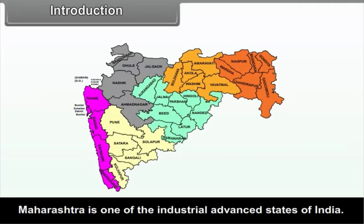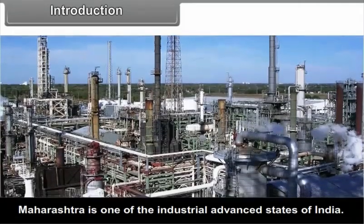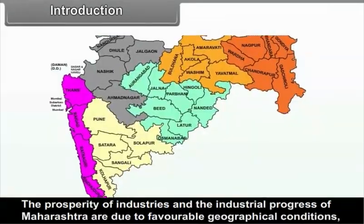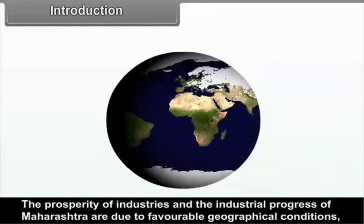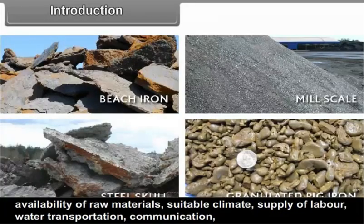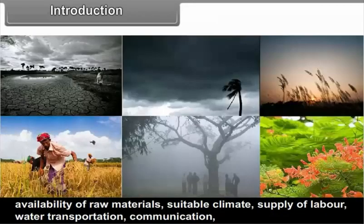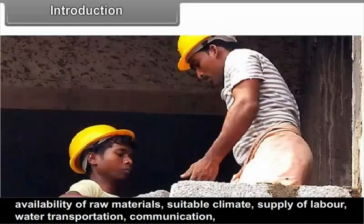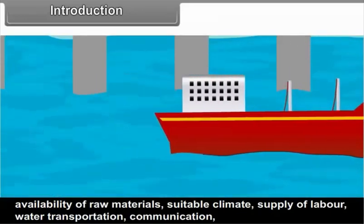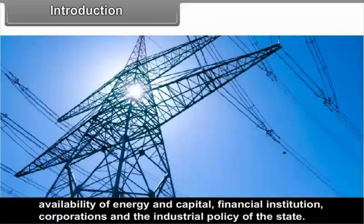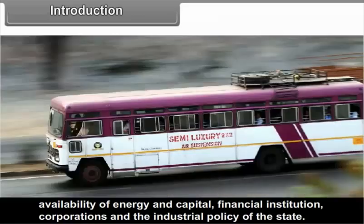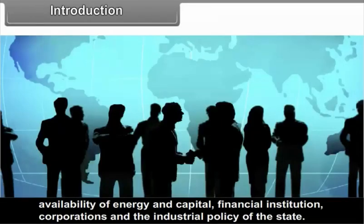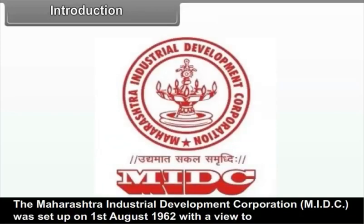Maharashtra is one of the industrially advanced states of India. The prosperity of industries and the industrial progress of Maharashtra are due to the favourable geographical conditions, availability of raw materials, suitable climate, supply of labour, water, transportation, communication, availability of energy and capital, financial institutions, corporations and the industrial policy of the state. The Maharashtra Industrial Development Corporation,